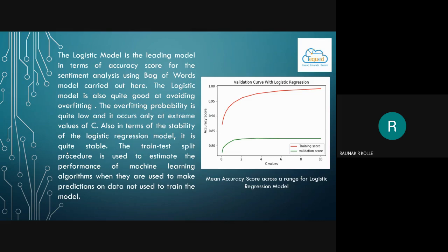The logistic model is the leading model in terms of accuracy score. For the sentiment analysis using bag of words model carried out, the logistic model is also quite good at avoiding overfitting. The overfitting probability is quite low and it occurs only at extreme values of c. Also, in terms of the stability of the logistic regression model, it is quite stable. The train test split procedure is used to estimate the performance of machine learning algorithms when they are used to make predictions on data not used to train the model. We see here a graph of accuracy score versus c value, where the red line indicates the training score and the green line indicates the validation score. It is a mean accuracy score across a range of logistic regression model.